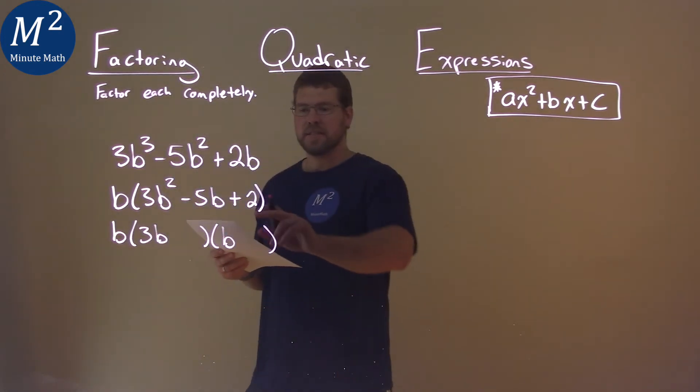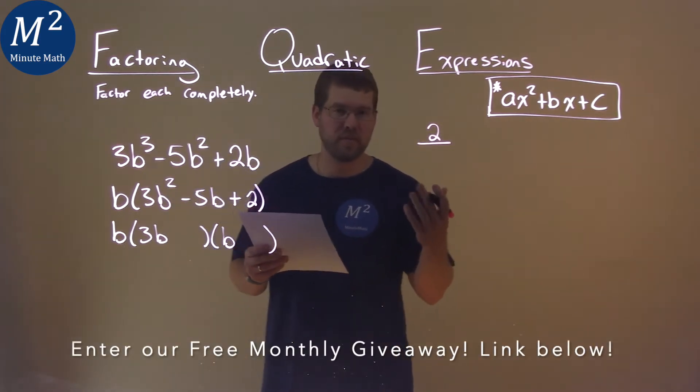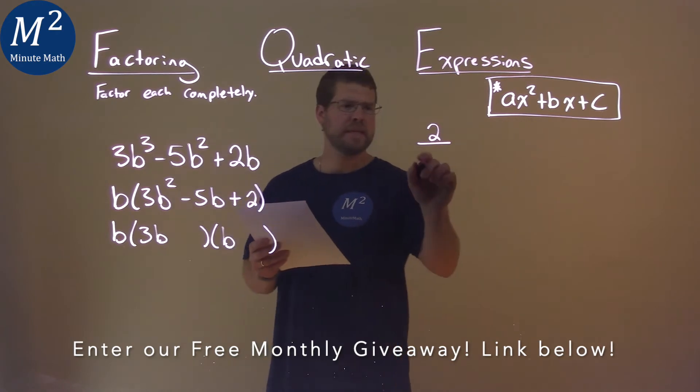Now let's look at our c value. C value is 2. So we have to ask ourselves, what two numbers multiply to be 2? That's 1 and 2.